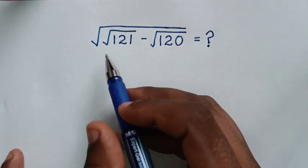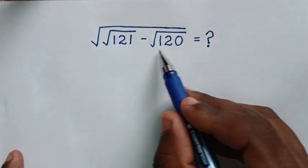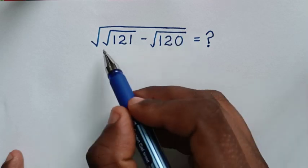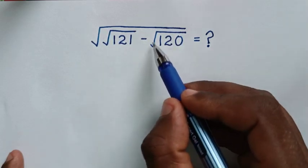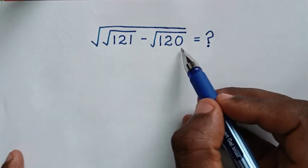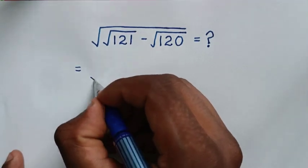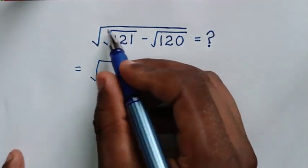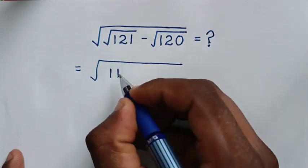Welcome. We are going to solve this math problem: the square root of (√121 minus √120). This will be equal to the square root of √121, which is 11, minus √120.